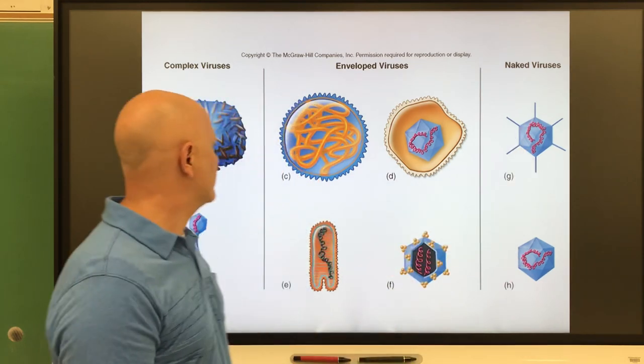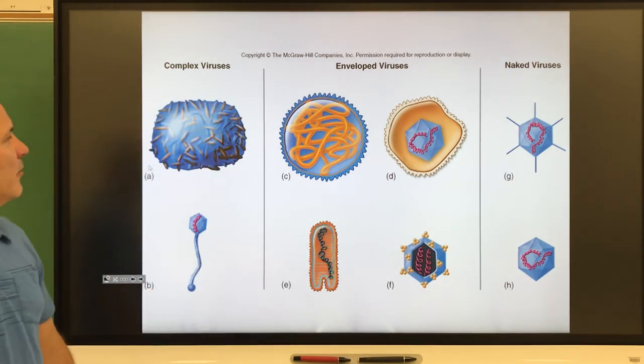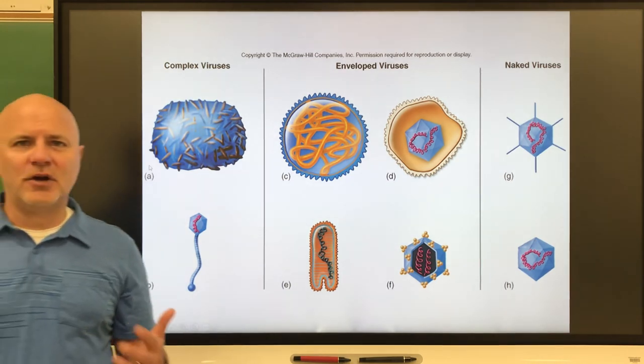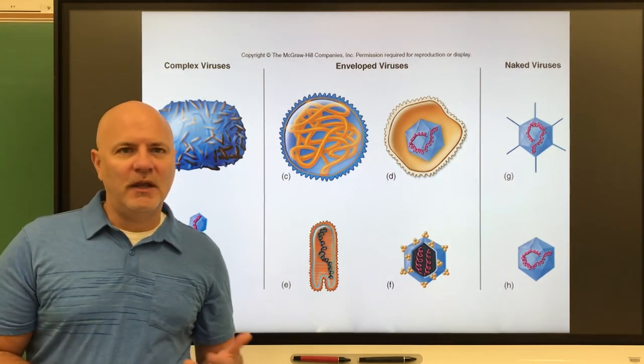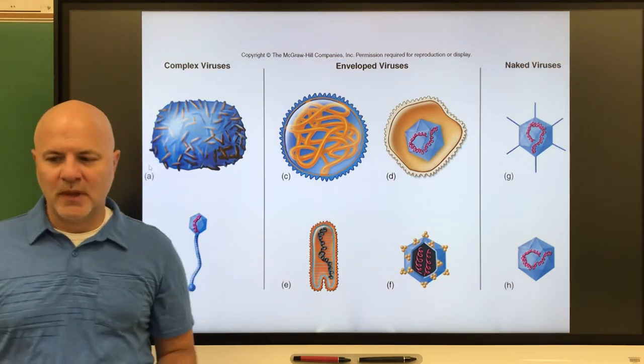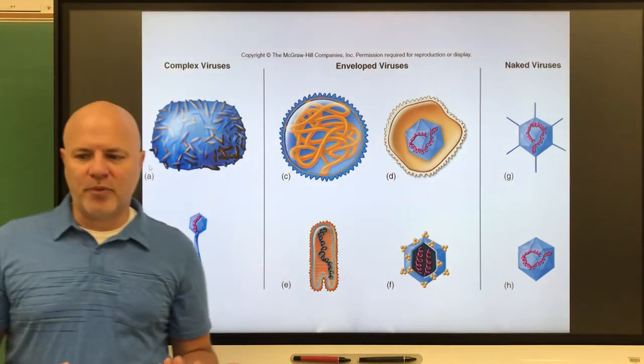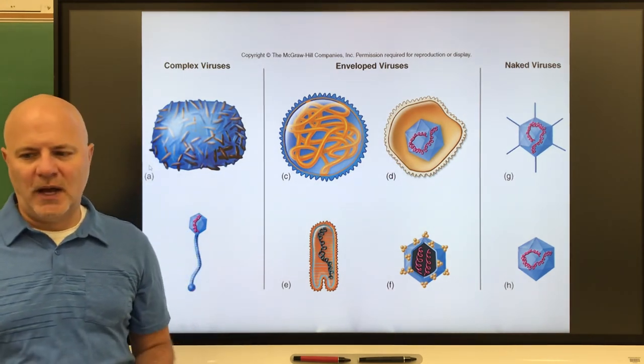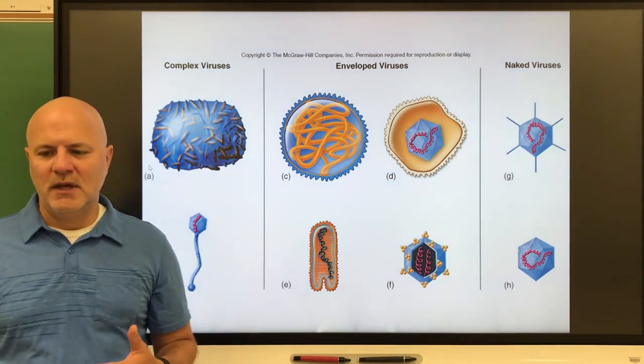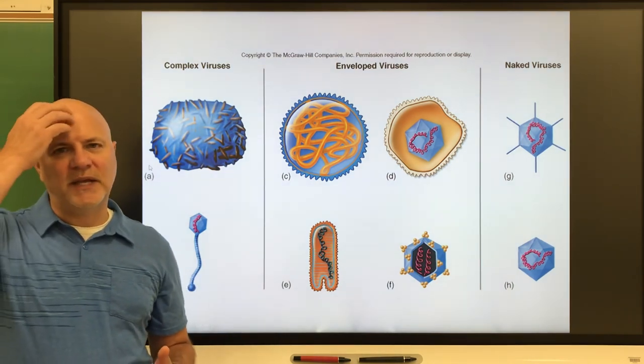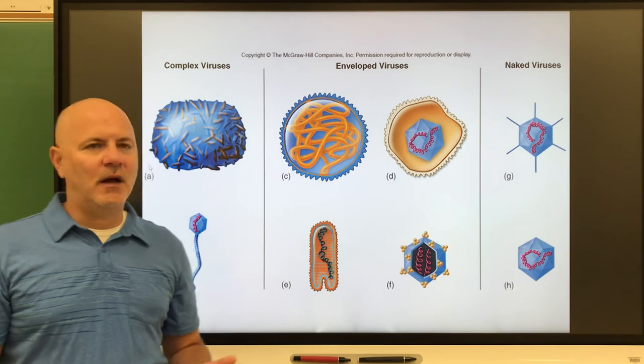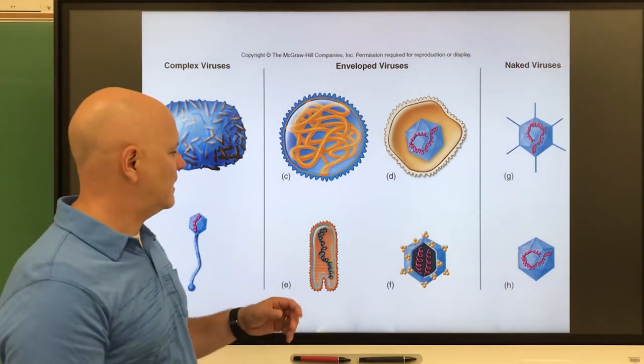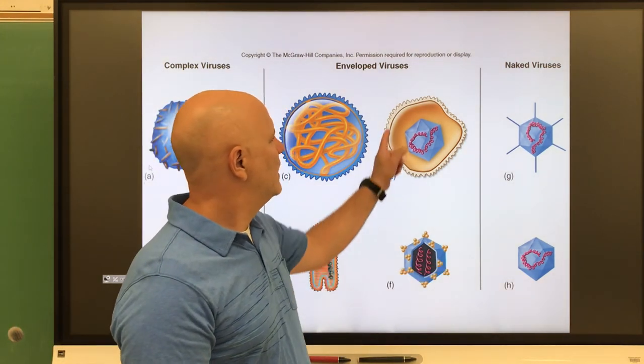You get more complex as we move to the left side. The capsids are composed of capsomers, the proteins that comprise the viral capsid. They can also have viral proteins in there, proteins other than the capsomers. They're going to help the virus recognize and enter their host cells, help replicate the genetic material, and help the virus remain hidden.